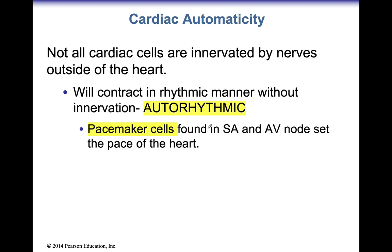We're going to change gears to talking a little bit about physiology, but still keeping it geared towards anatomy. The heart does not need external innervation in order for it to pump. If you've ever seen a video of a heart transplant, they can take the heart out of a human's body and put it into Ringer's solution — a solution that has all the nutrients needed for the heart to keep pumping — and that heart keeps pumping on its own, even though it's completely out of the person's chest.